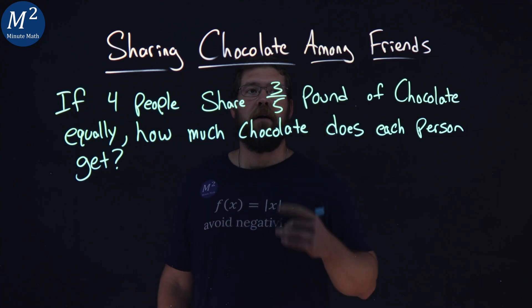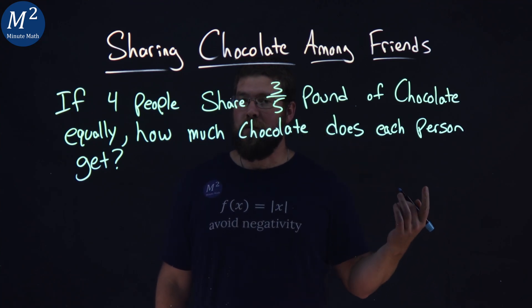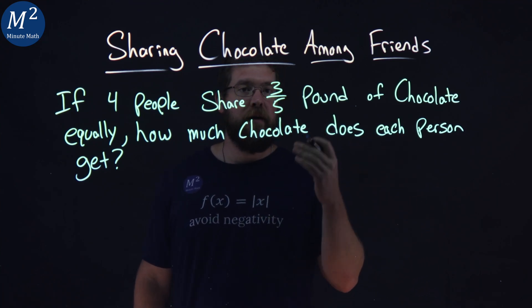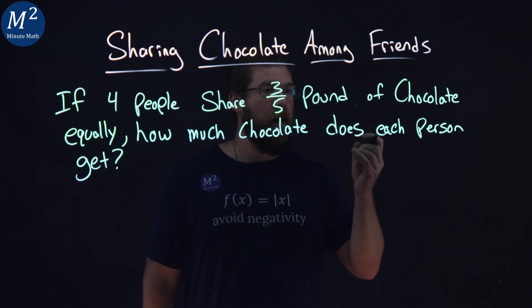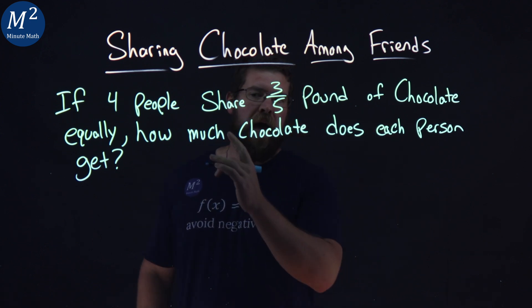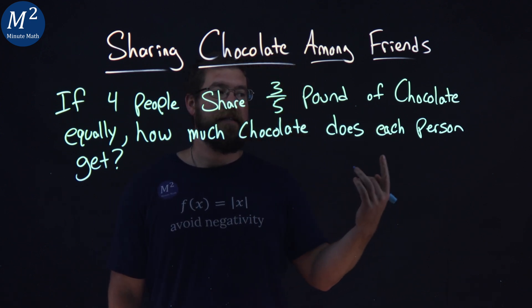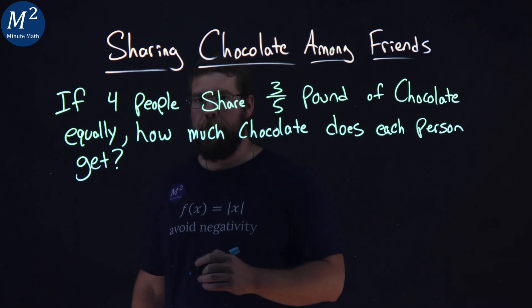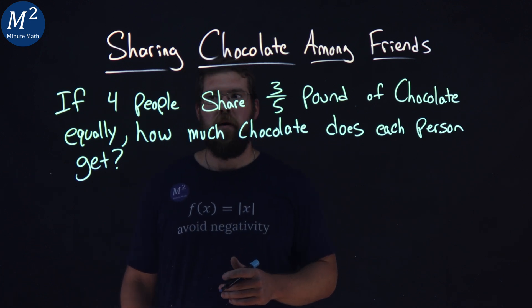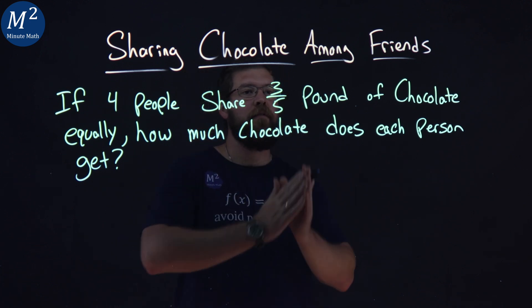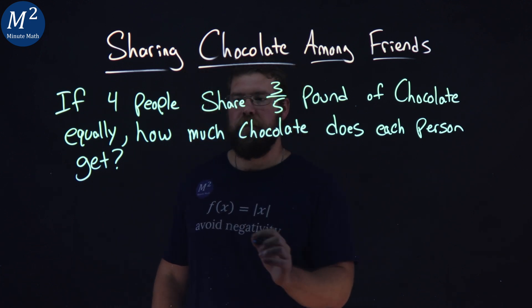Let's learn about sharing chocolate among friends. If four people share three-fifths pound of chocolate equally, how much chocolate does each person get? So four people are sharing three-fifths pound of chocolate.